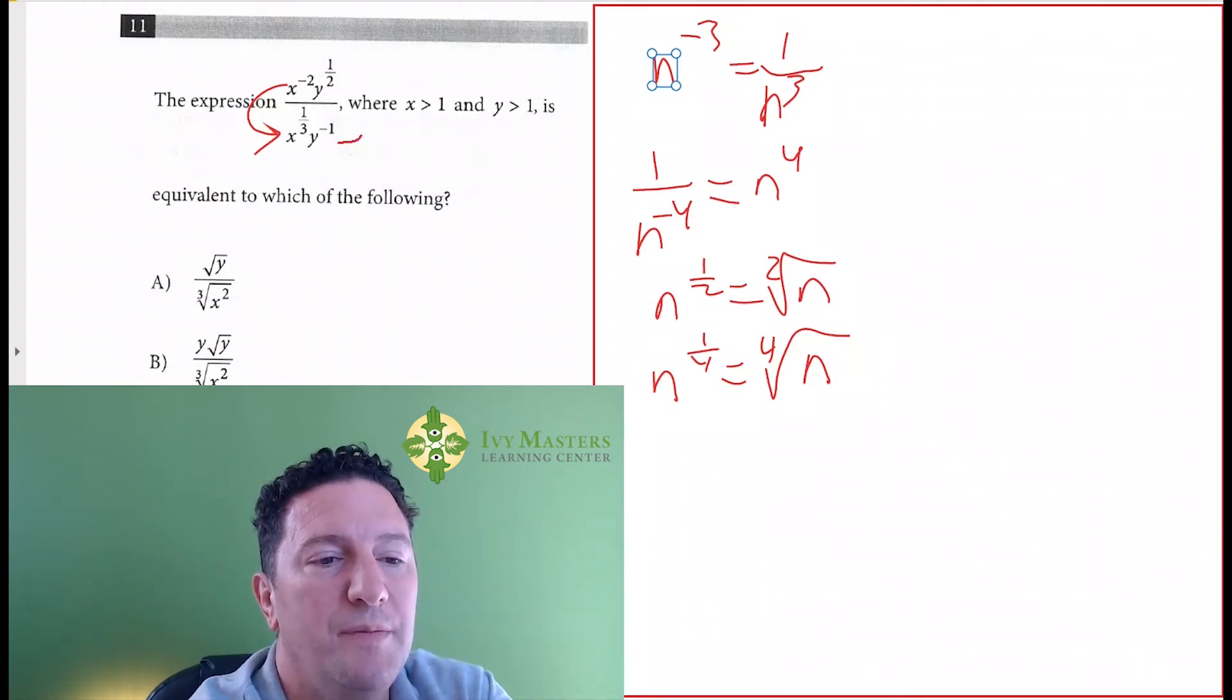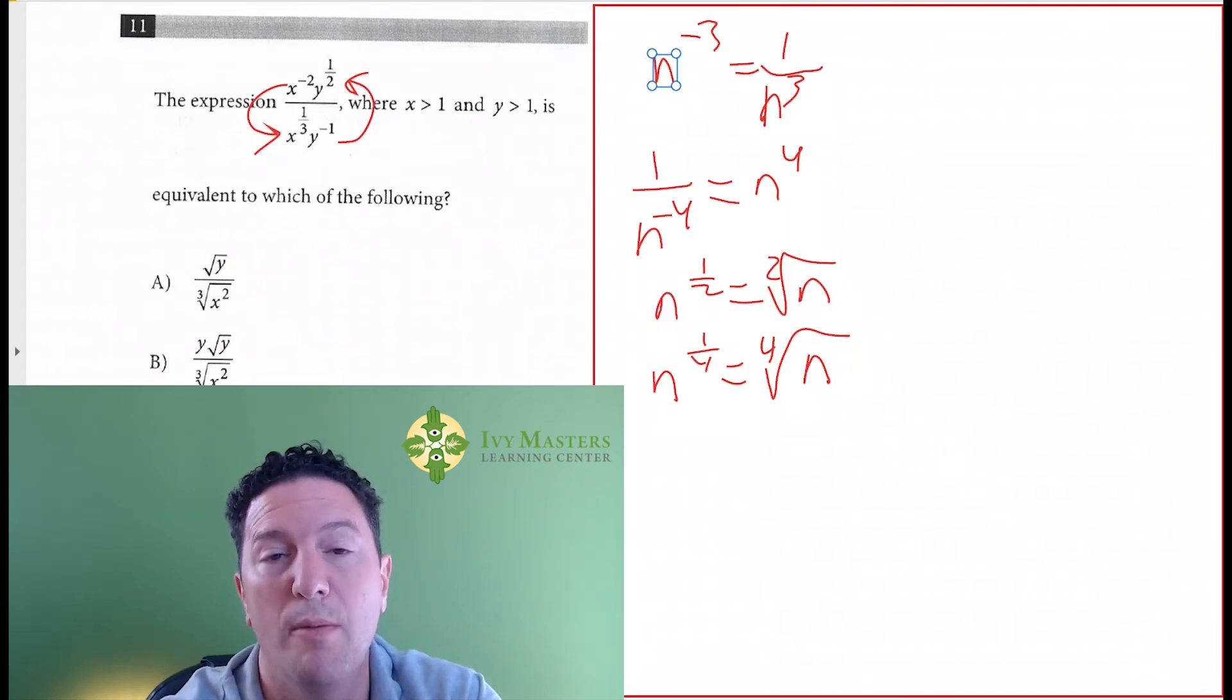If we've got y to the negative 1 in the bottom, then it's going to be y to the first in the top. Notice in choice D has straight up y, which is y to the first up top.